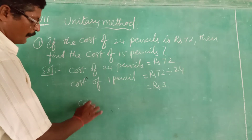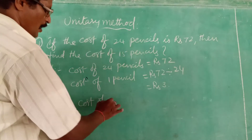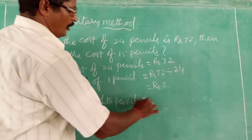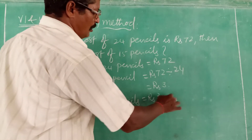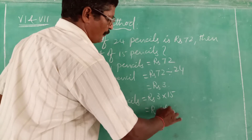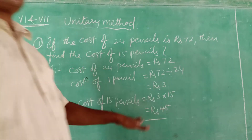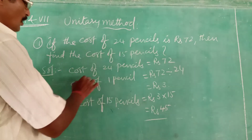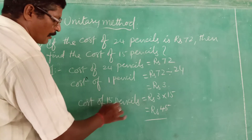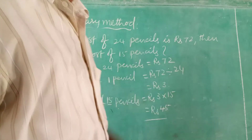Then cost of 15 pencils = Rs. 3 into 15, that is equal to Rs. 45. 3 fifteens are 45. This is the answer. First find the cost of 1 pencil and then find the cost of required number of pencils. This is Unitary method.